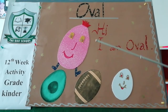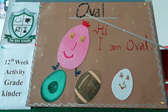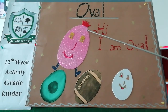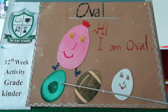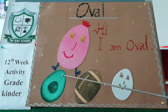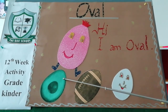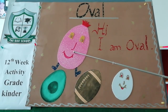Hi, I am Oval. I have no corners. Mere kohi kohne nahi hai. Avocado, it's a fruit. Avocado joh hai, ye fruit hai. Iska bhi shape joh hai, oval ki tarah hai.